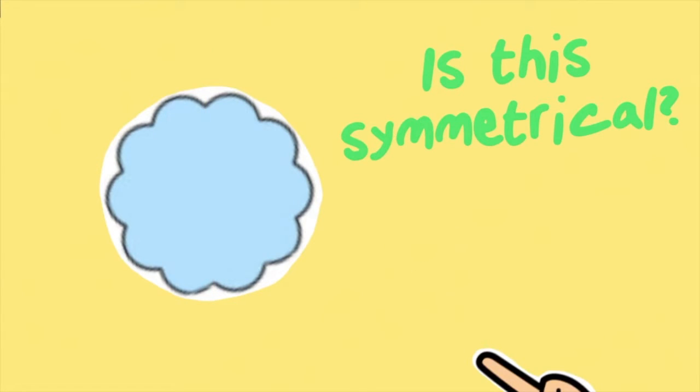But can this shape have more than one line of symmetry? I can also put a line down this way. So that means that I've got more than one line of symmetry. I've got quite a few lines of symmetry here. The shape is definitely symmetrical.